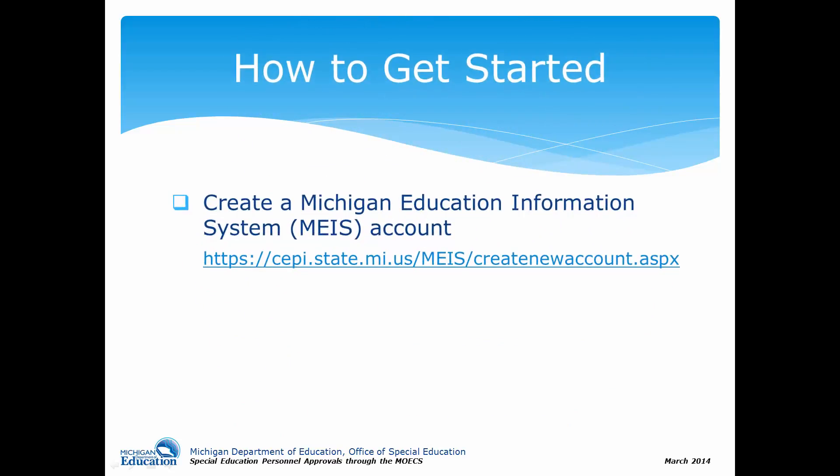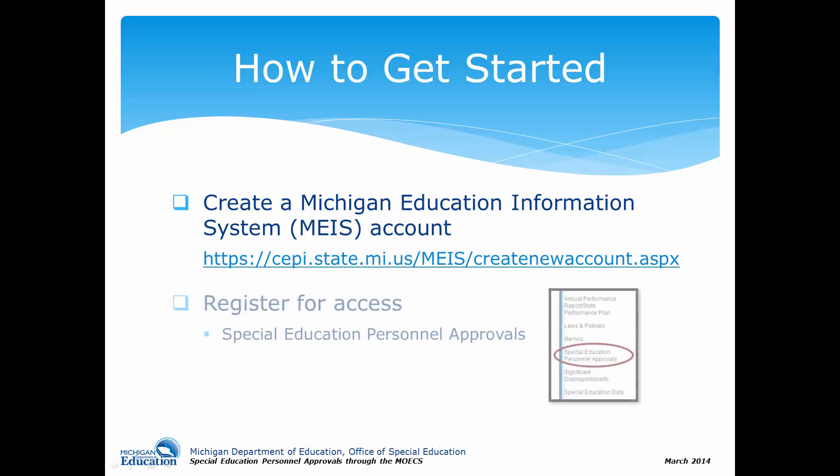How can I access the MOECS? You need to first create a Michigan Education Information System, or MIS, account by visiting the website at https://cepi.state.mi.us/create-new-account.aspx. If you already have a MIS account for yourself as an applicant or educator, you will need to apply for an additional MIS account for approvals. Once you have successfully created the MIS account, you need to register to have access for special education personnel approvals through the MOECS by filling out the form from the special education personnel approvals website and returning it to the Office of Special Education.